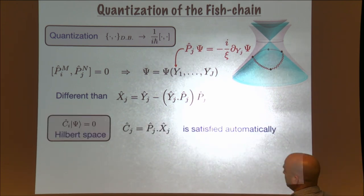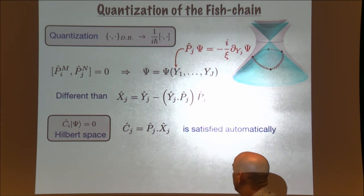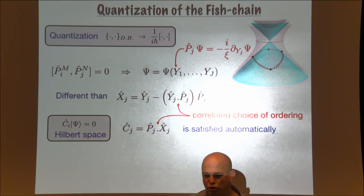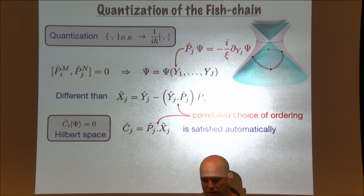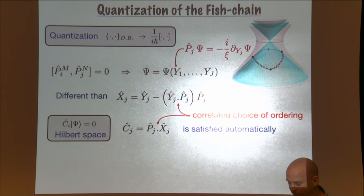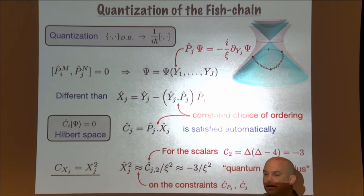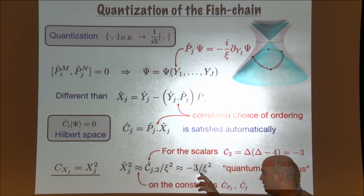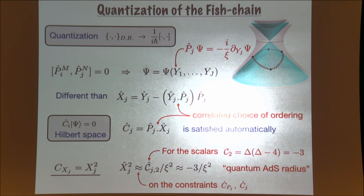Once you plug this relation into one of the J constraints, it is automatically satisfied — the two terms cancel each other. Then for the x^2 constraint at the quantum level, x^2 becomes the quadratic Casimir for a single scalar. For these scalars of dimension one, this quadratic Casimir is minus three. It tells us that at the quantum level, x^2 is no longer zero — you get a quantum correction of order 1/xi^2. This is how we see AdS starting to appear from the quantization. When writing the quadratic Casimir in terms of generators, the X·P=0 constraint ensures the result is the same whether written in terms of Y's or X's.